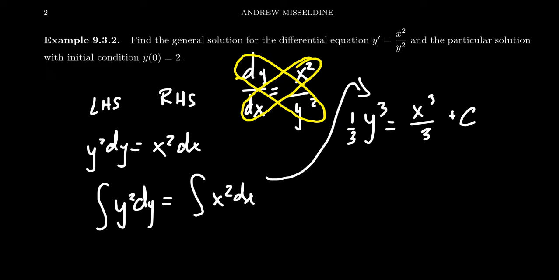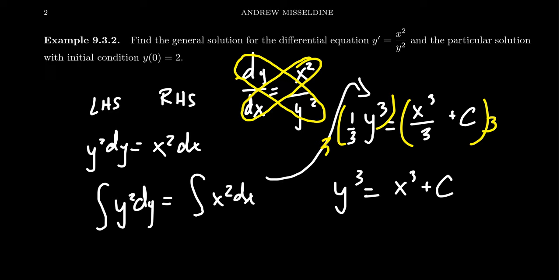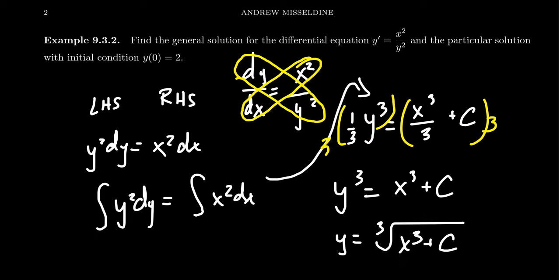To solve for y, multiply both sides of the equation by 3. On the left you get y cubed, and on the right you get x cubed plus c — the 3 and one-third cancel, and 3c is just replaced with c since it's still an arbitrary constant. To find the general solution, take the cube root of both sides. We get y equals the cube root of x cubed plus c. This is our general solution.